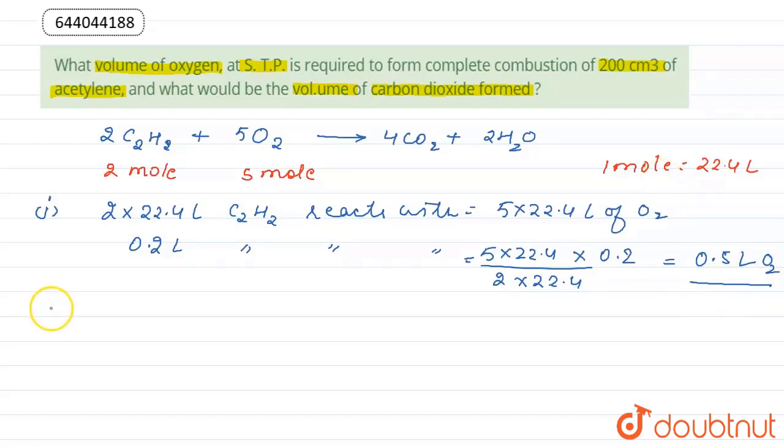This is first part of the question. For the second part, we have to use the moles of CO2 formed in the reaction. In the balanced chemical equation, 4 moles of CO2 are formed by 2 moles of acetylene. It can be written that 2 into 22.4 liter of C2H2 is producing